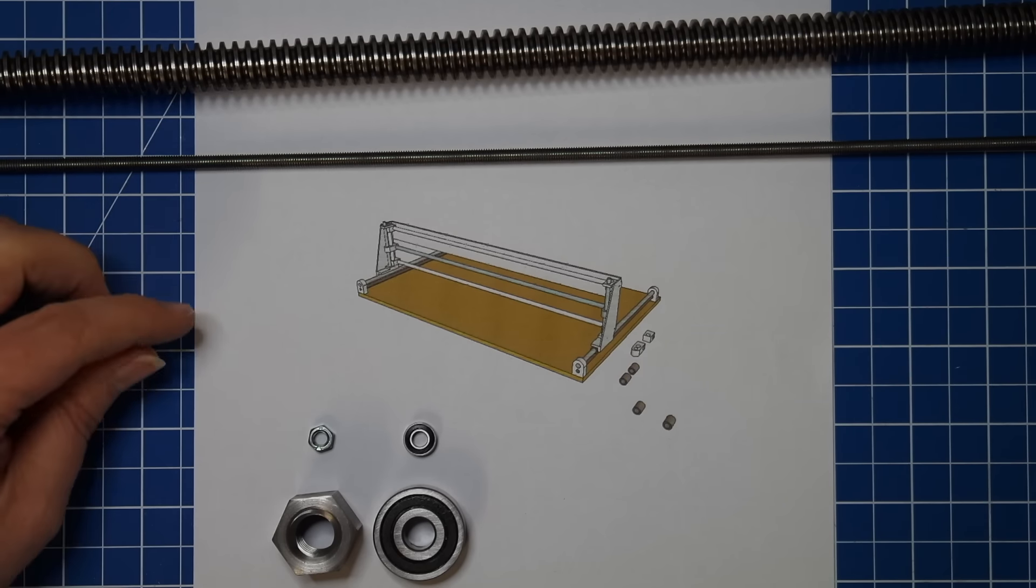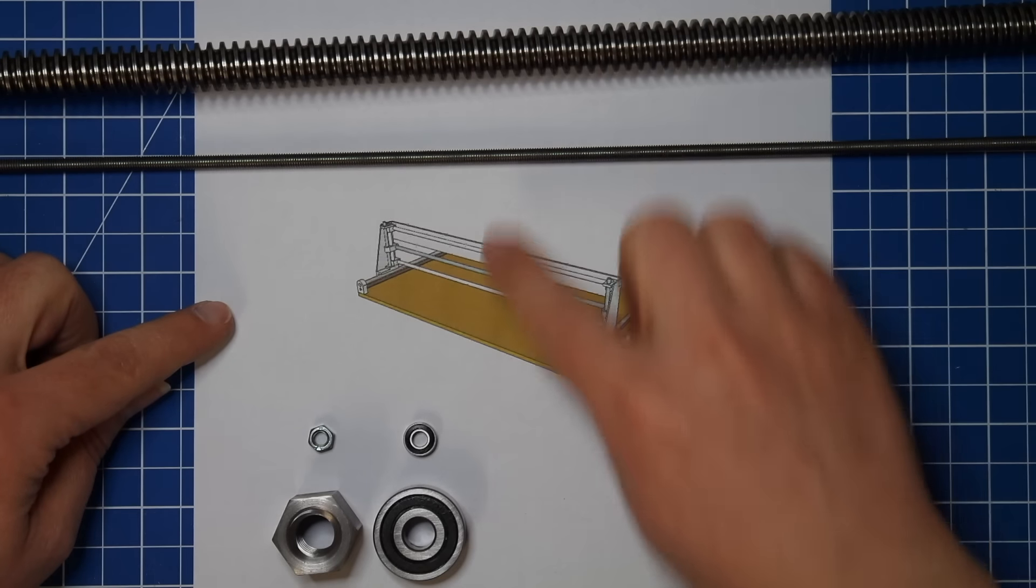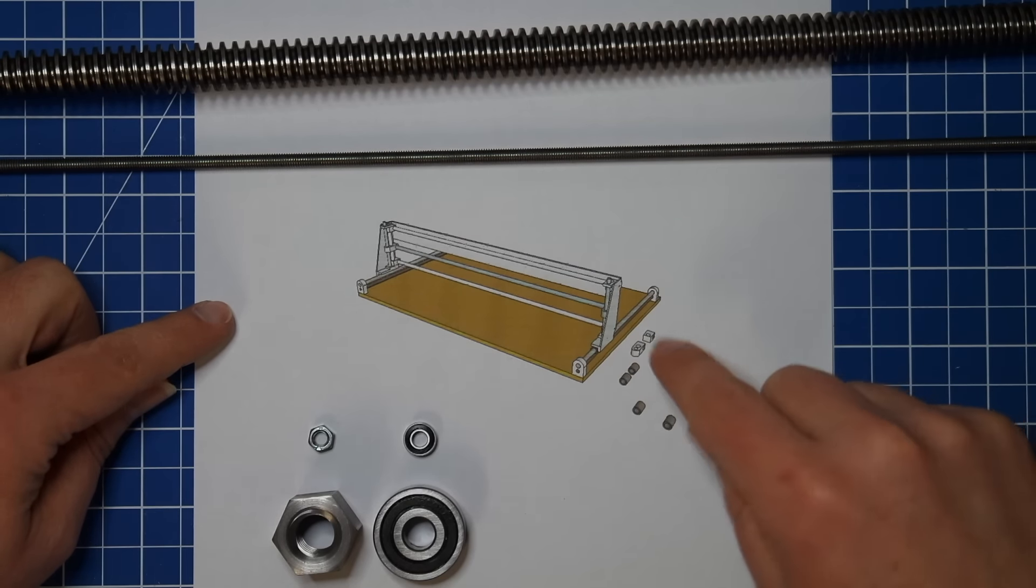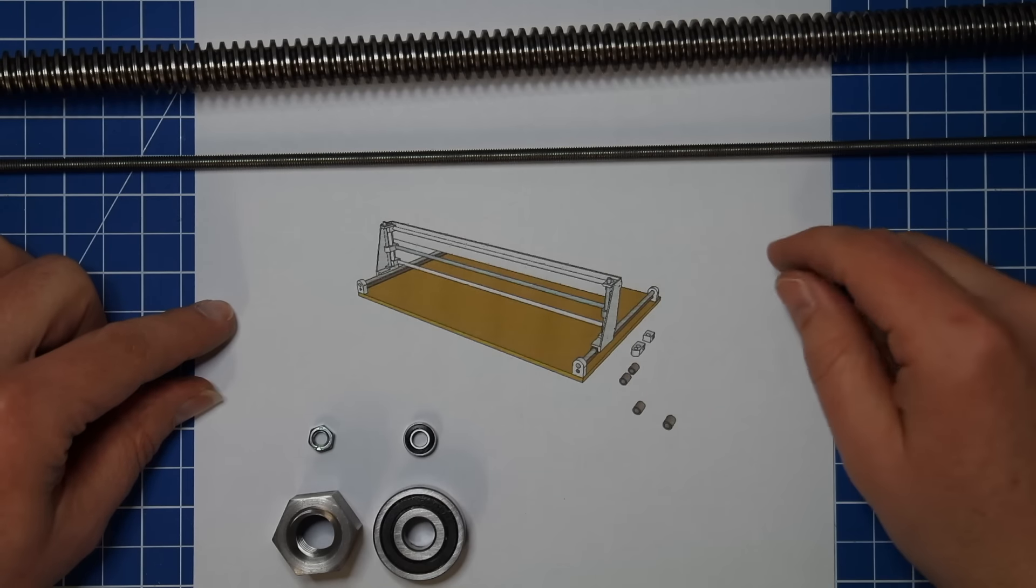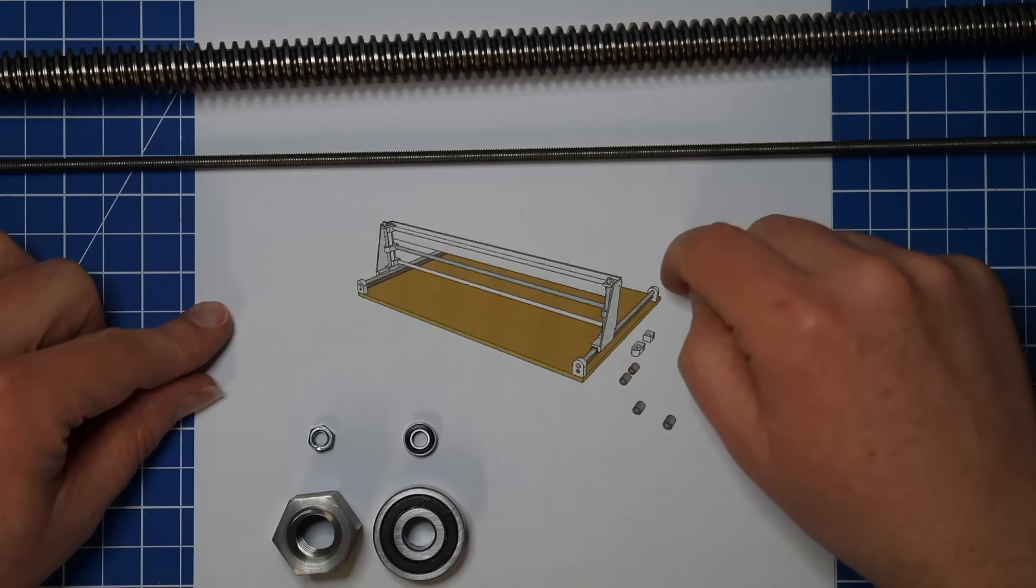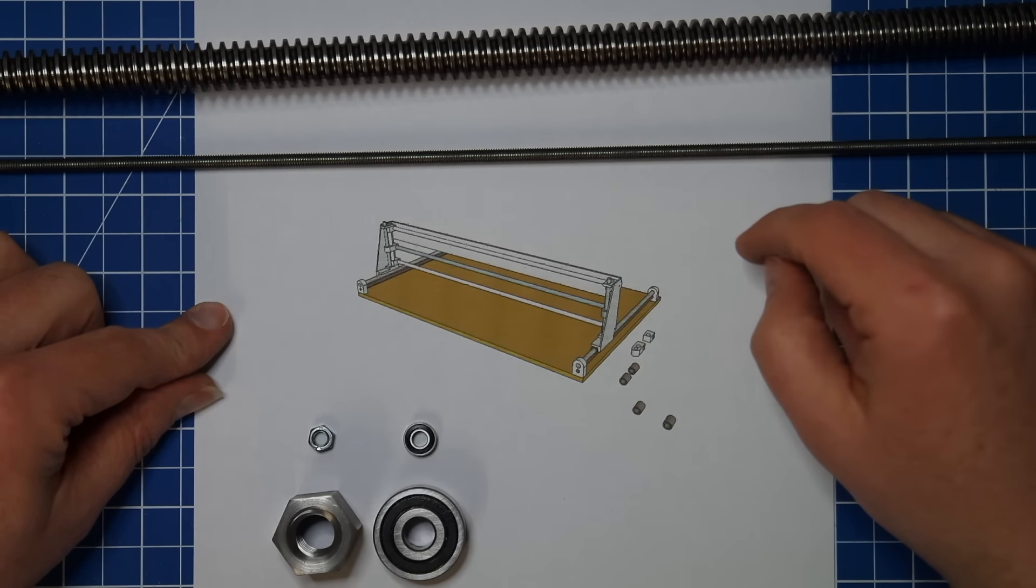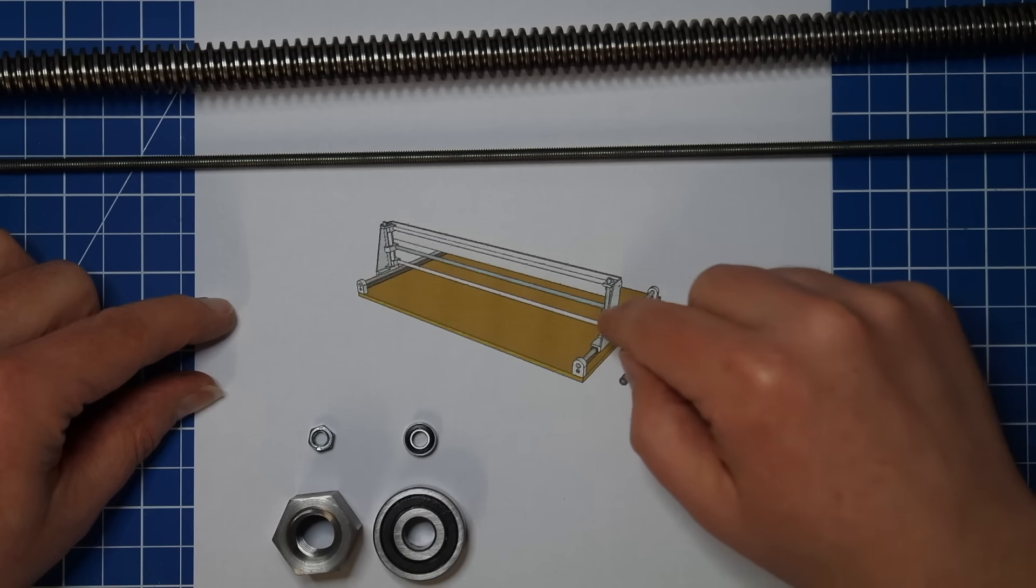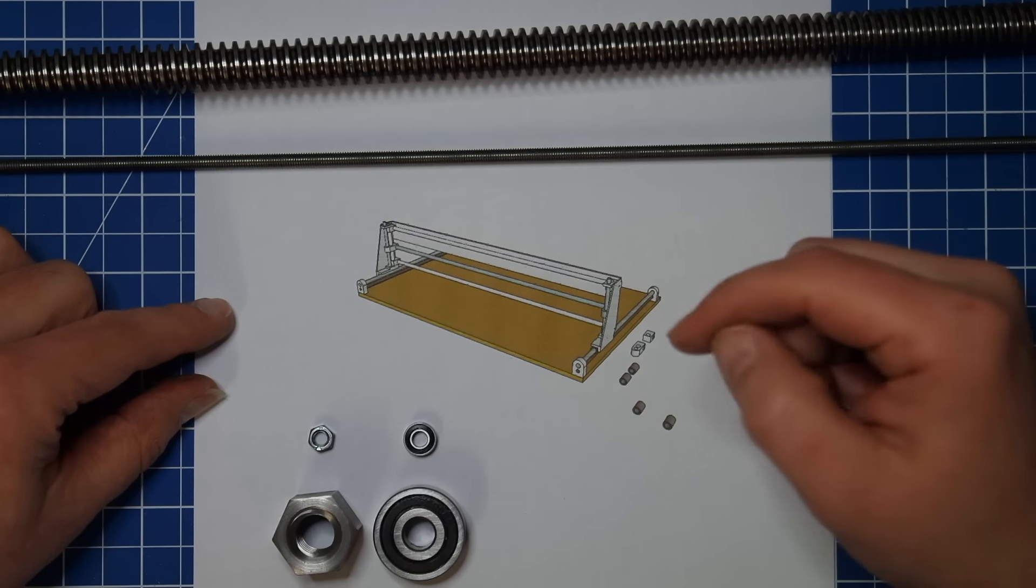The basic structure will be that there will be an x-axis and a y-axis or maybe the other way around. It will have two steppers on each side and it will have one stepper for the other axis.